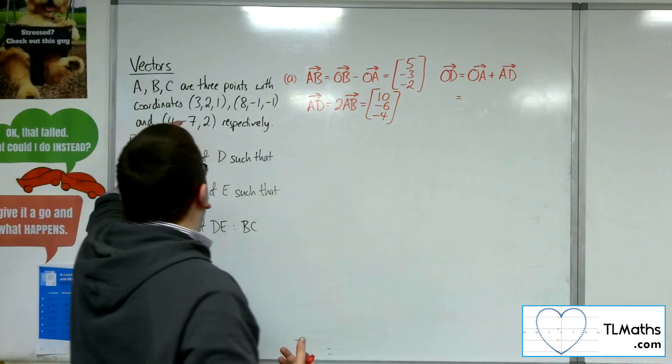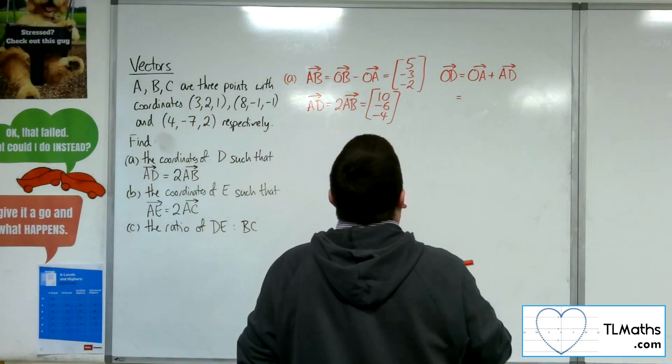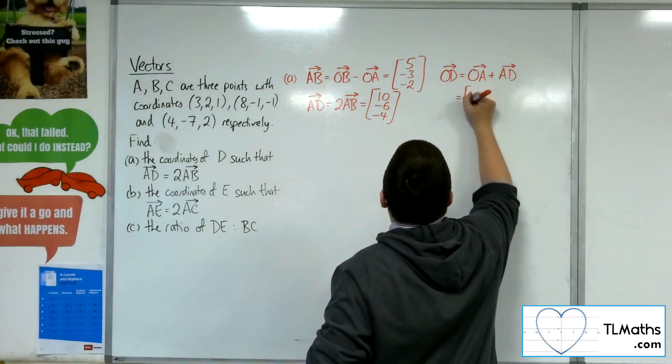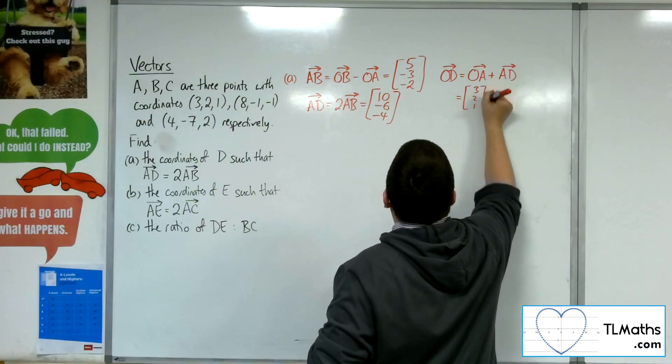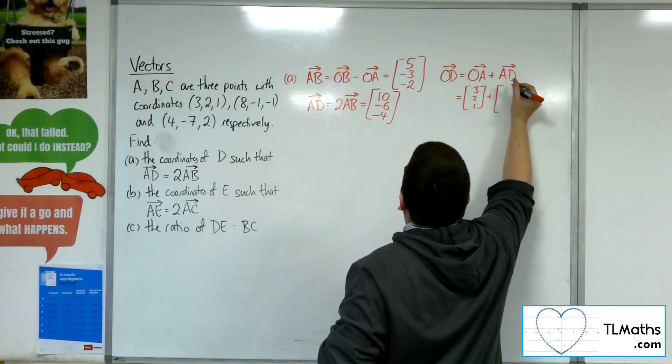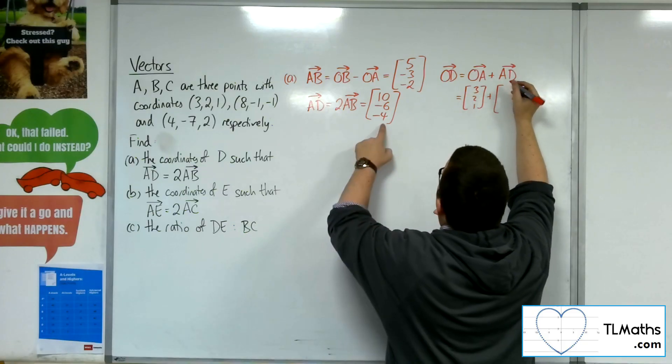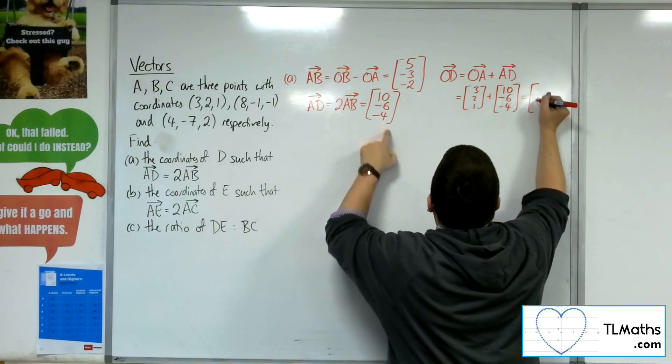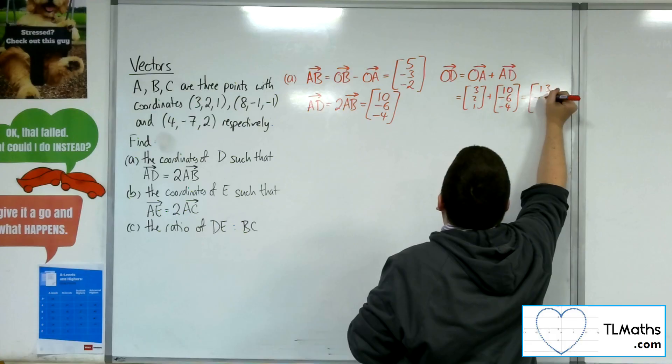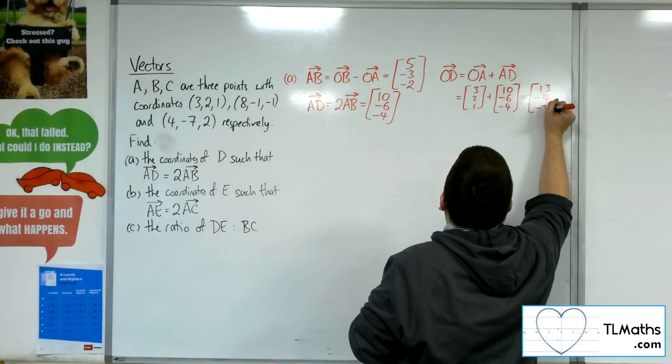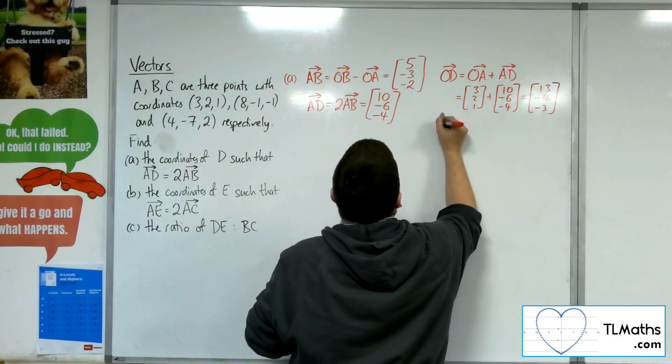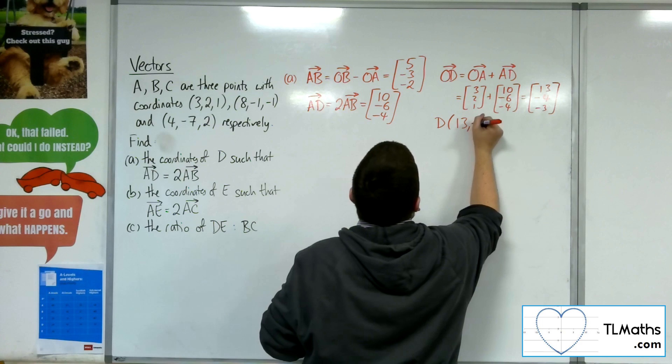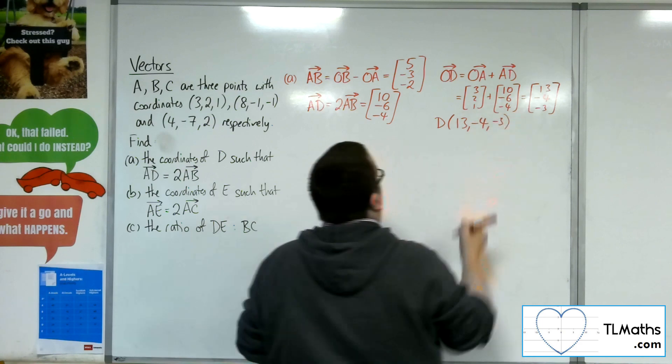So the position vector of A is 3, 2, 1. And I'm adding on the vector AD, which is 10 minus 6 minus 4. So we're going to have 13 minus 4 and minus 3. So D must have the coordinates 13 minus 4 minus 3.